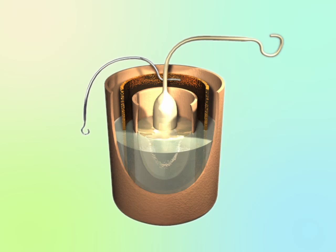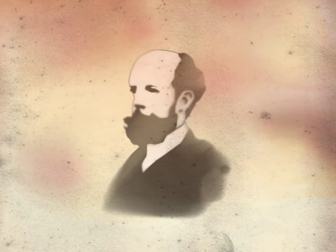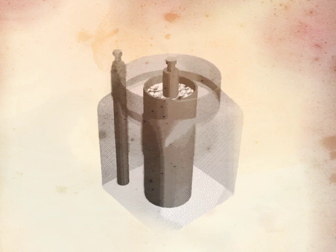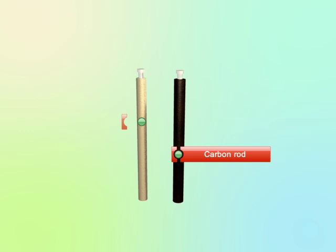Georges Leclanché was a French electrical engineer with a research focus on galvanic cells. In 1866, he invented the Leclanché cell that utilizes carbon instead of copper, but still makes use of zinc.